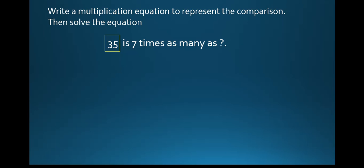So 35, let's write 35 first. 'Is' simply means equals. Then we have 7 times. That's a multiplicative comparison. So we're going to write 7 times. It says as many as what? That's what we're looking for. So here we have, what number do we multiply 7 by to give you 35?